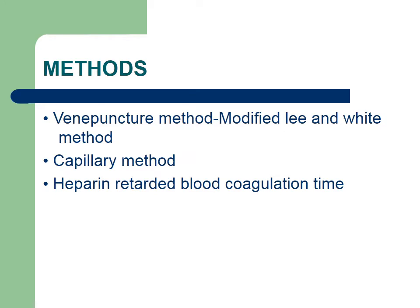What are the methods for calculating the clotting time? There are various methods for determining the clotting time. The most common method is the capillary tube method, which is affected by calcium ion levels and many other diseases. The normal value for clotting time is 2 to 8 minutes. Other methods are the venipuncture method and heparin-retarded blood coagulation time.